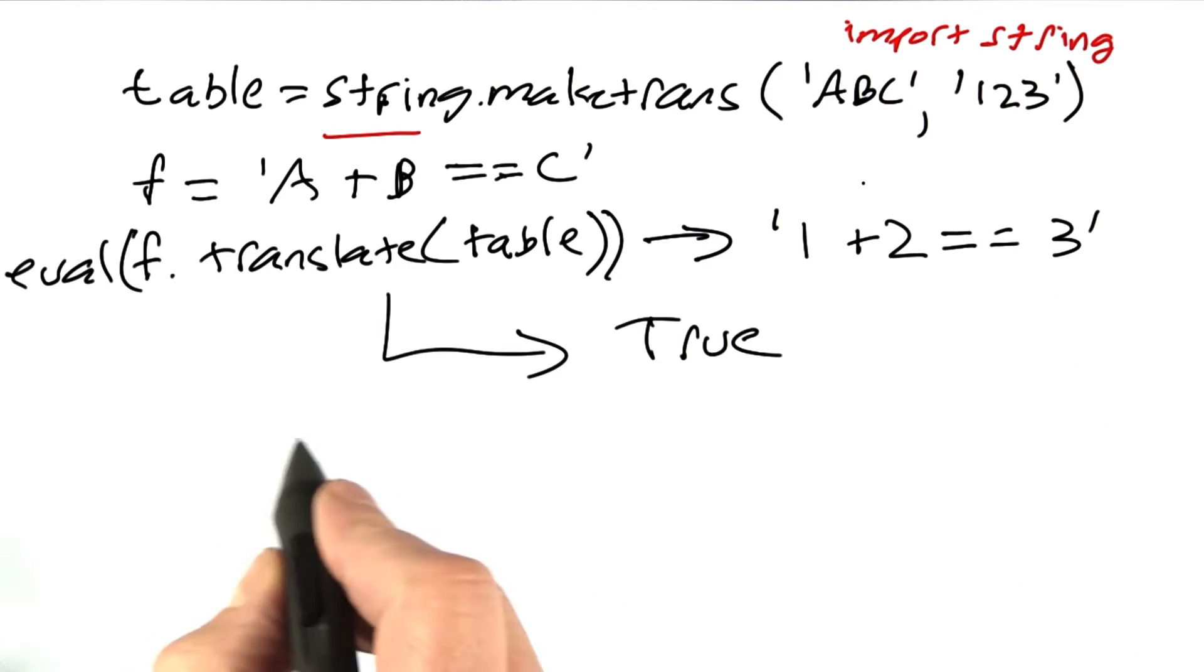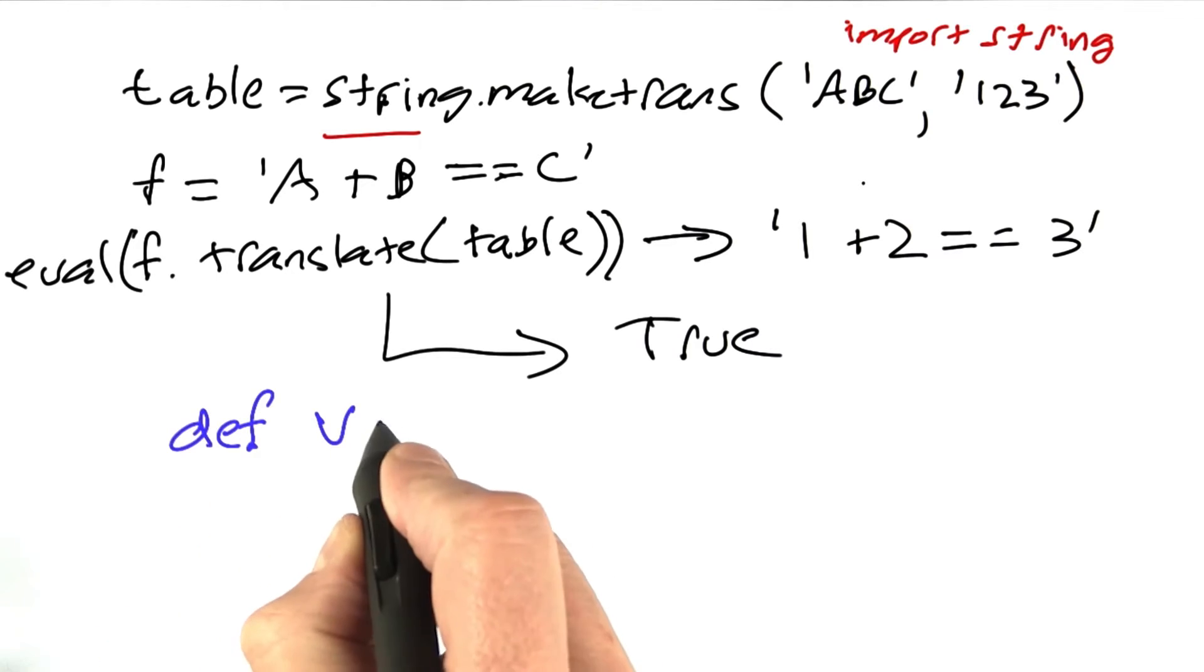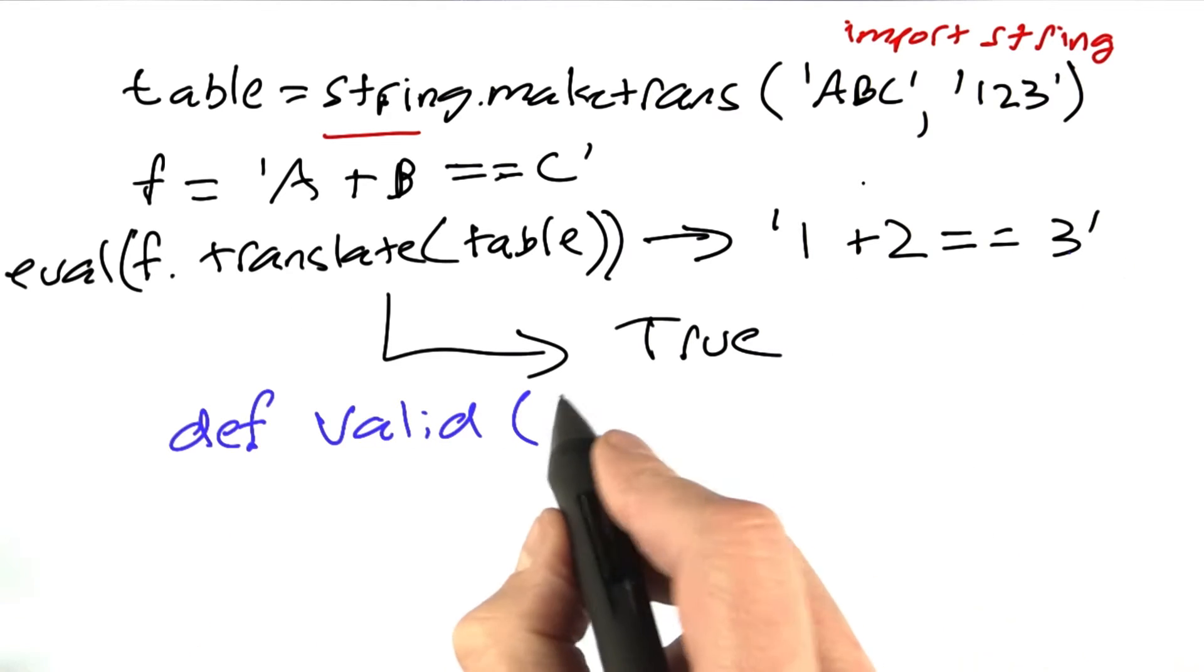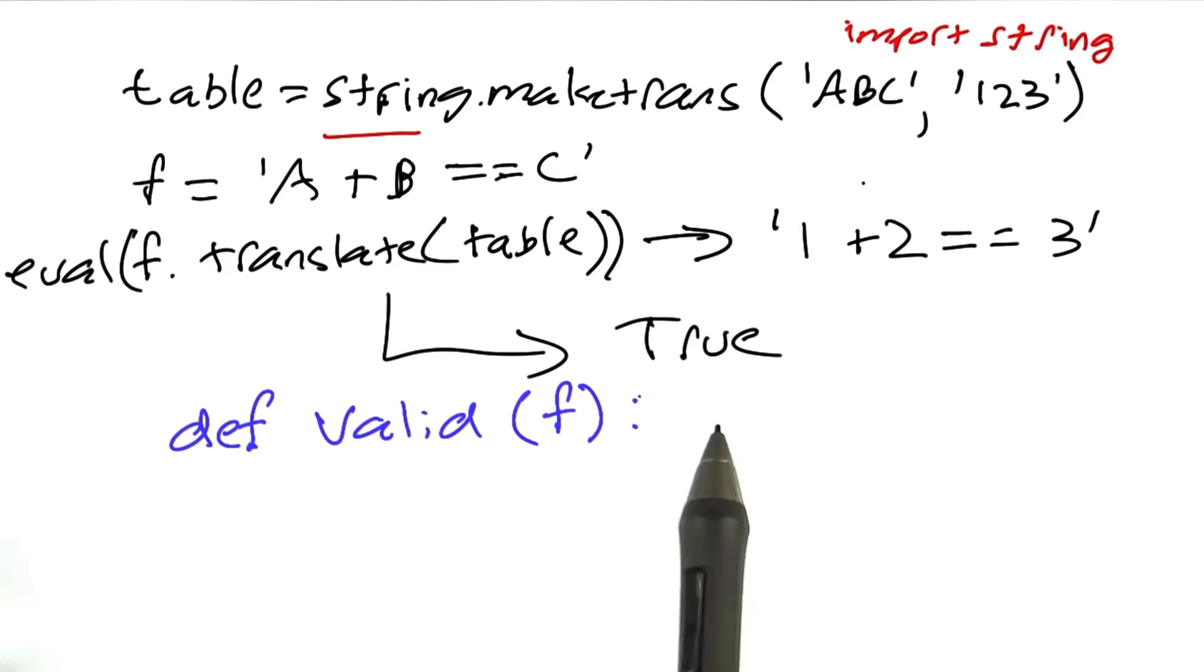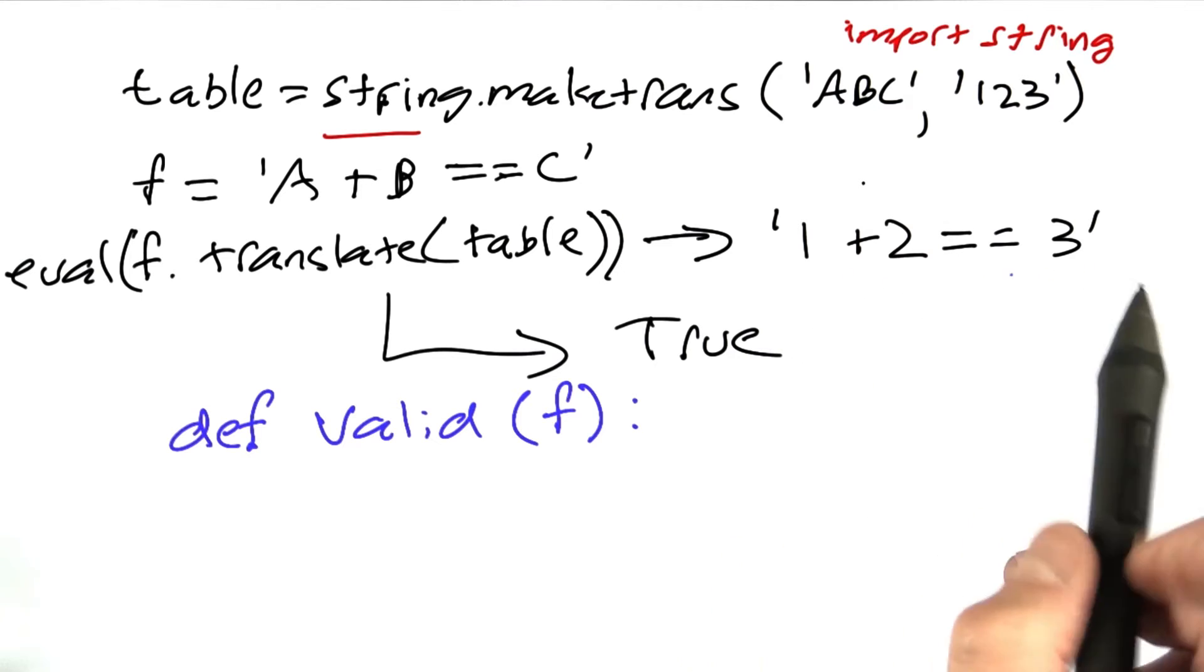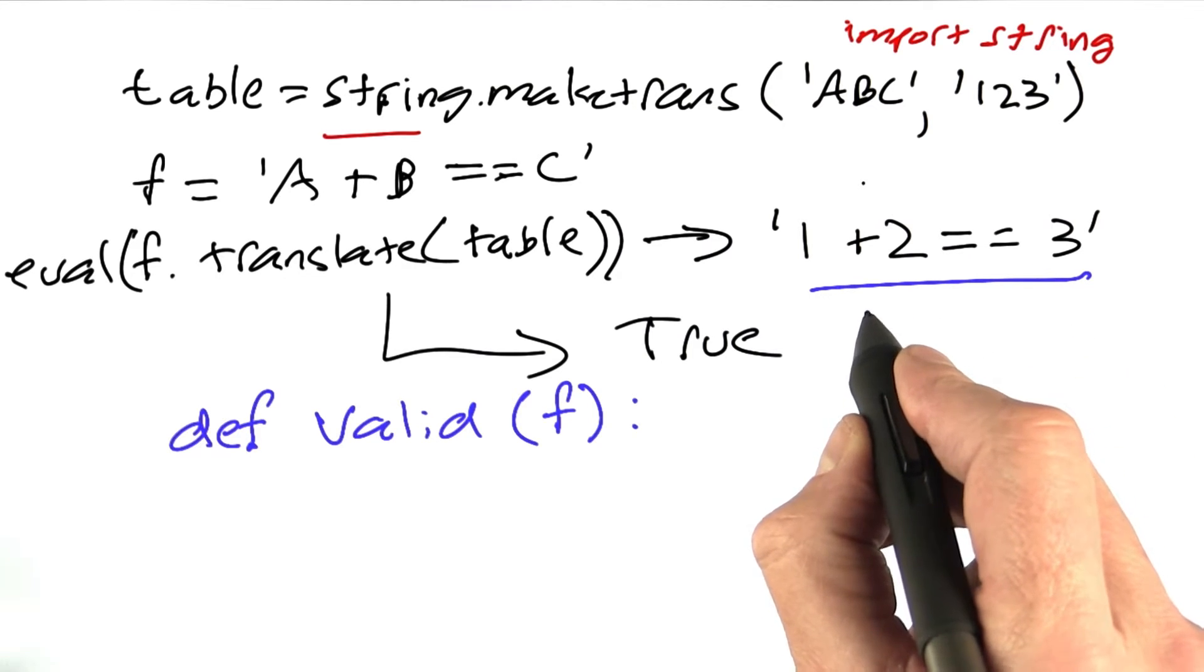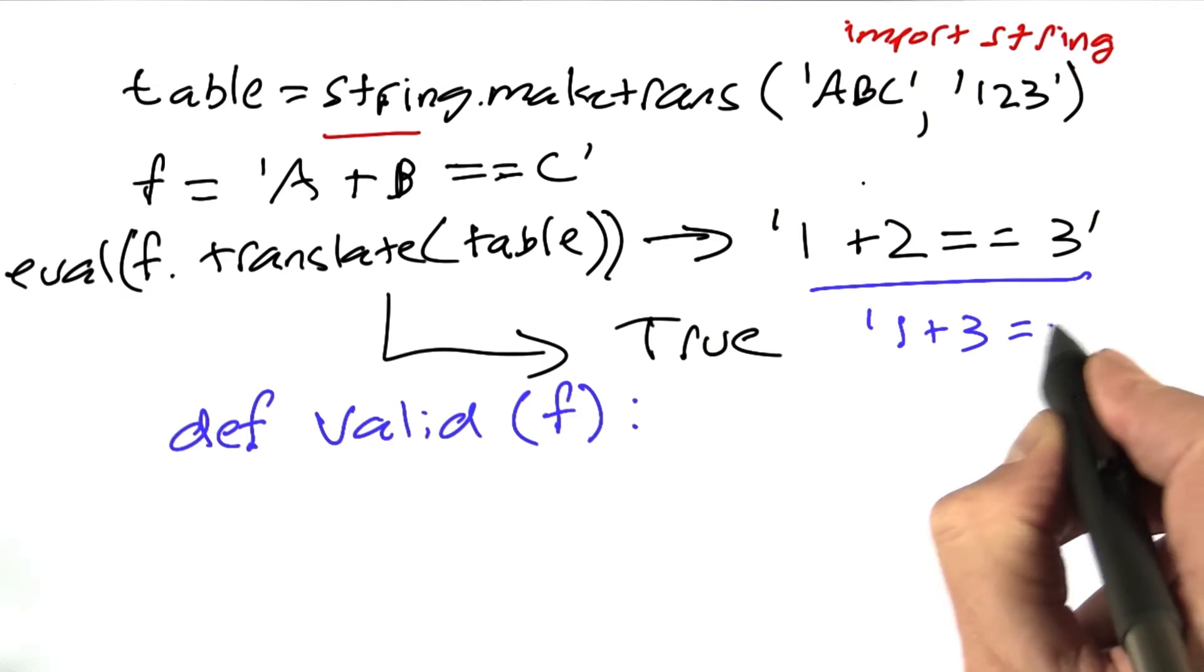Now what I want you to do is to define for me the function valid, which takes a filled in formula like 1 plus 2 equals 3, and returns true or false. True if the formula is in fact valid, if it represents a true equation like this, and false if it represents an invalid equation, like 1 plus 3 equals 3.